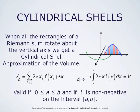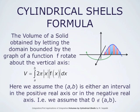If the interval is not on the positive real axis or if f does not take positive values, we replace x and f(x) by their absolute values. The volume of a solid obtained by letting the domain bounded by the graph of f rotate about the vertical axis is given by the integral from a to b of 2 pi times |x| times |f(x)| dx. This formula is valid assuming that 0 does not belong to the open interval from a to b — that is, the interval lies entirely in the positive or negative real axis.